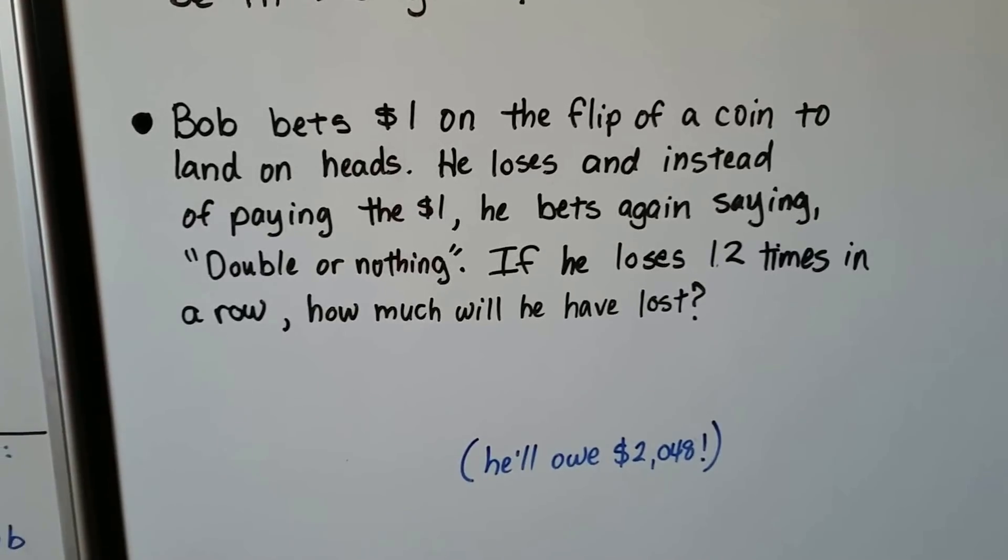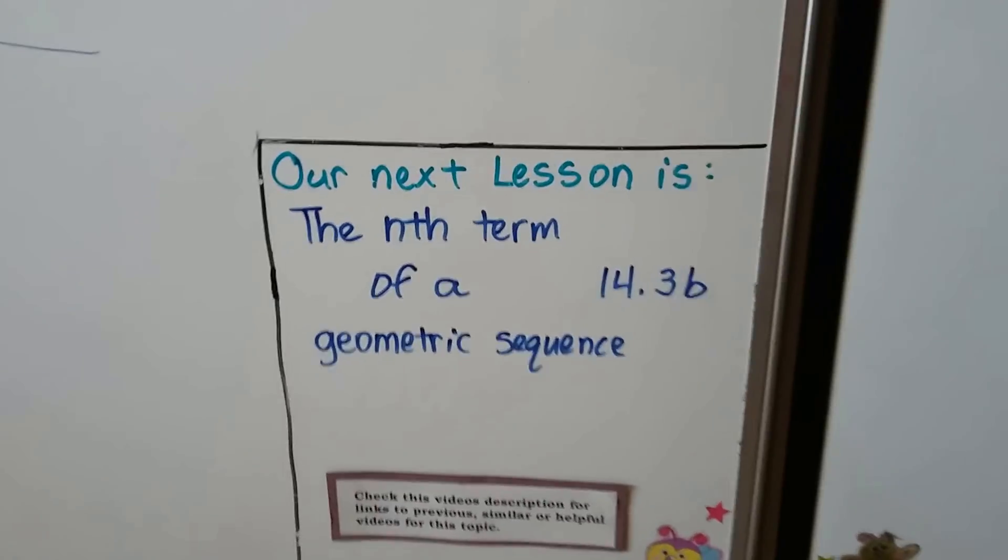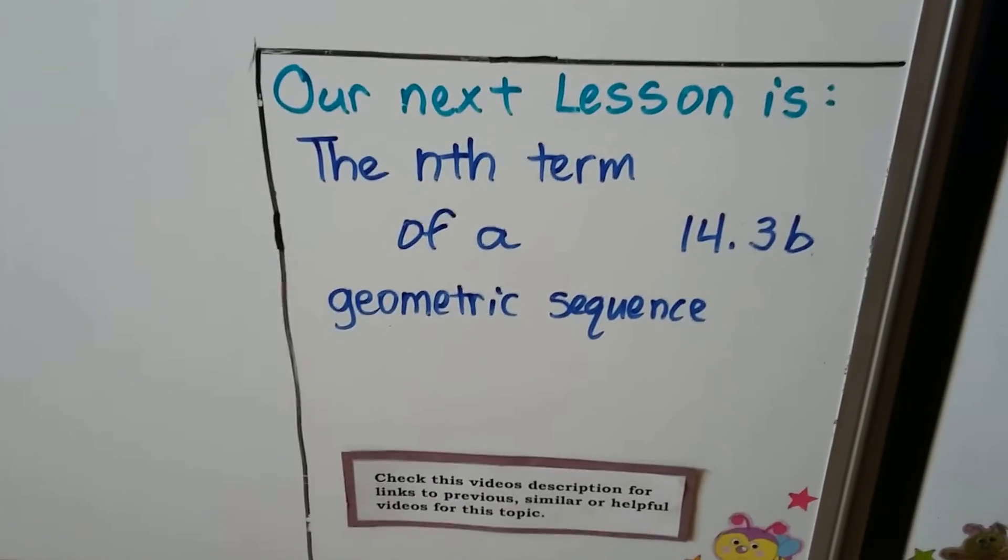He probably should have paid the dollar and walked away. So that's what we're going to be talking about in the next lesson, the nth term of a geometric sequence, lesson 14.3b.